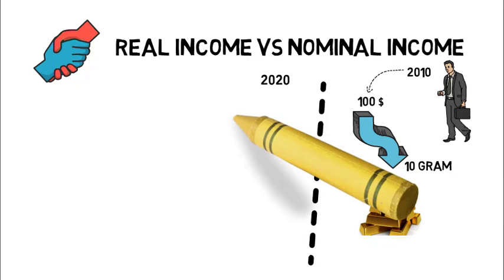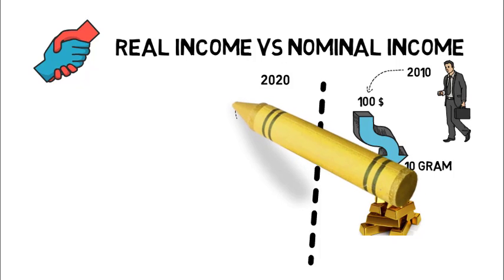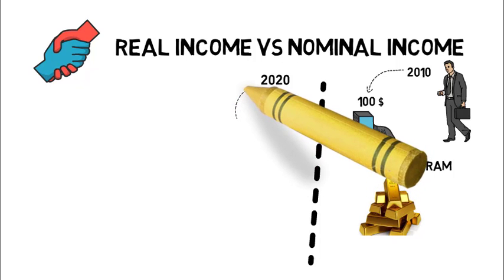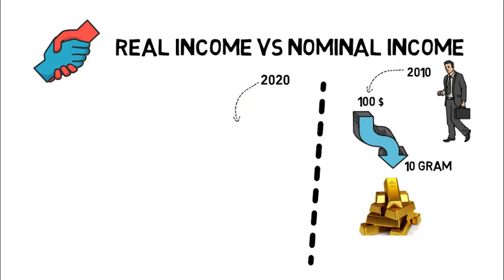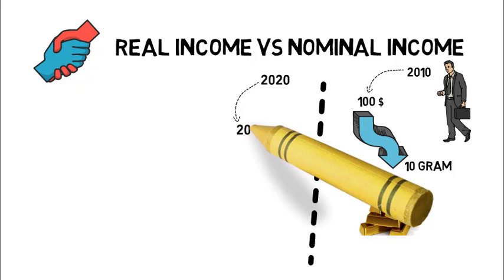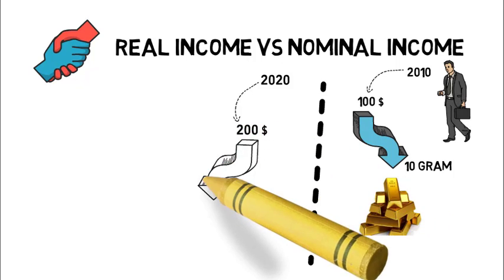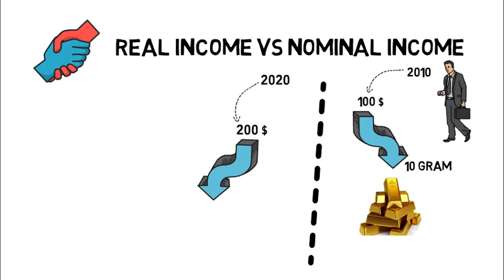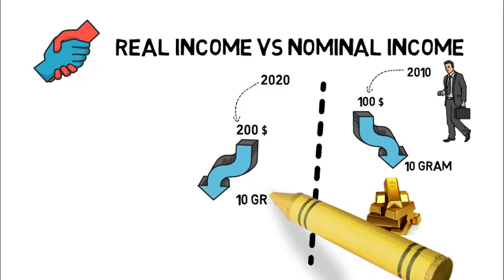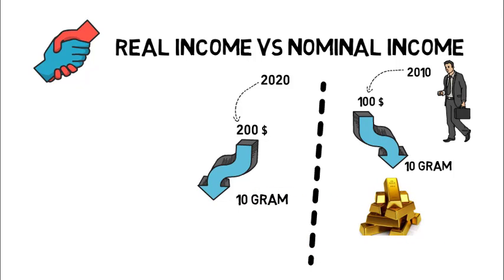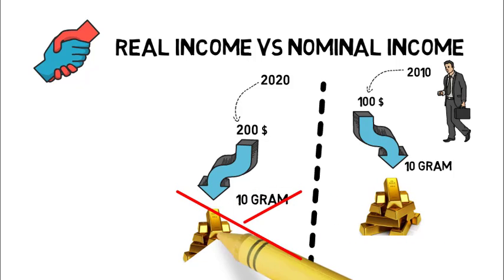But with the passage of time, in 2020, his income grew up and it became $200. But the situation got worse — with this $200, he was not able to buy 10 grams of gold.